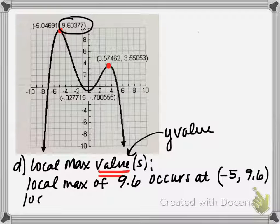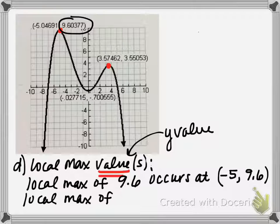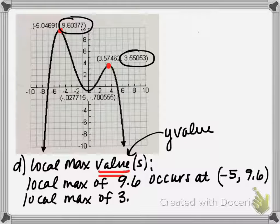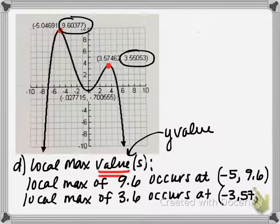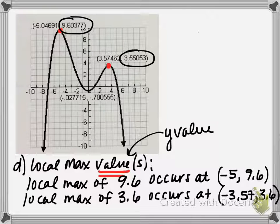Then we have a second local max value. Our second local max is about 3.6, or 3.55 if you include two decimals. And where that occurs, it occurs at the point approximately negative 3.57 comma positive 3.6. So those are my local max values.